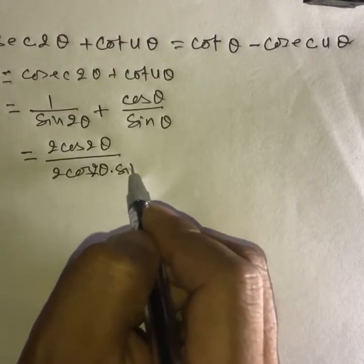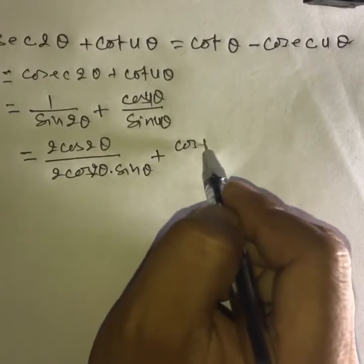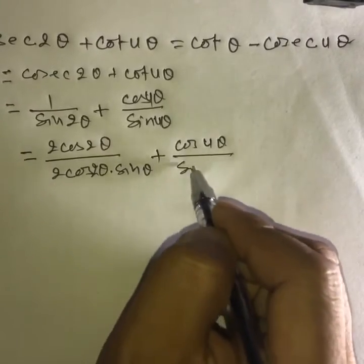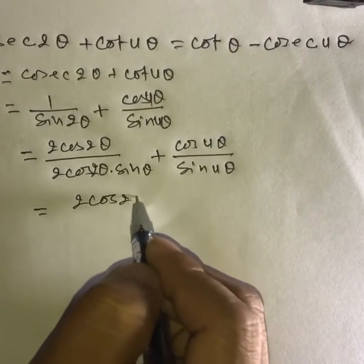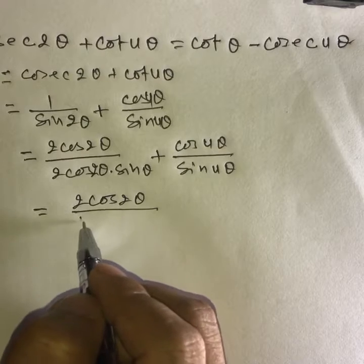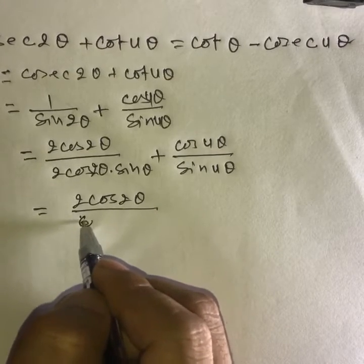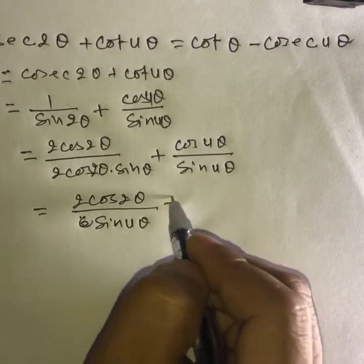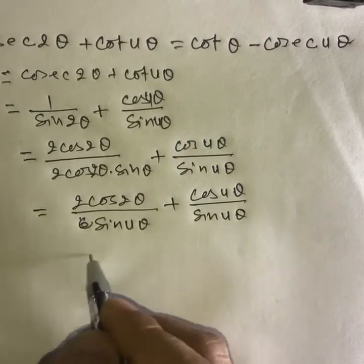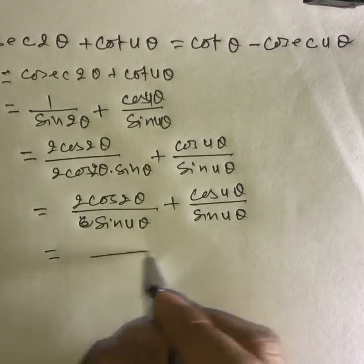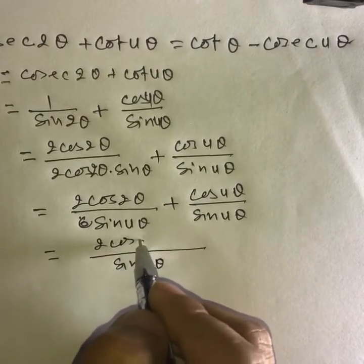2 theta dot sin theta, plus sin 4 theta cos 4 theta over sin 4 theta. It is 2 cos 2 theta over 2 sin a cos a, that is sin 2a. So we get sin 4 theta plus cos 4 theta over sin 4 theta. Taking LCM as sin 4 theta, and then 2 cos 2 theta...